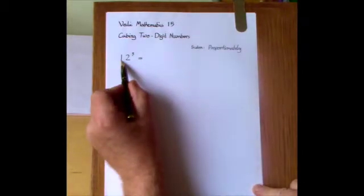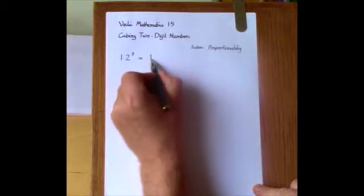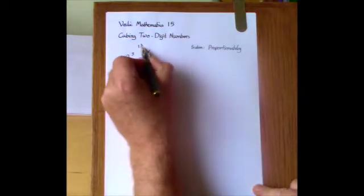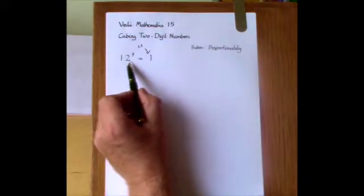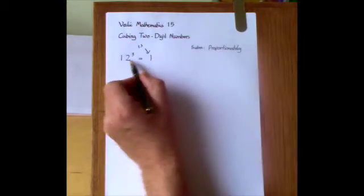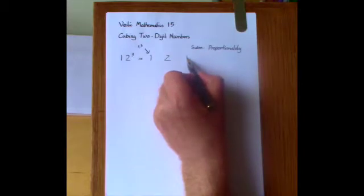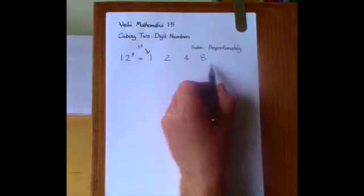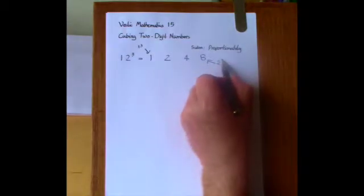We set down the cube of the first digit. The first digit is 1, so we set down 1 cubed, that's 1. We then take the ratio of the two digits — in this case 1 to 2 — and starting with this one, produce a geometric sequence with that ratio, which in this case is just doubling. We write down the next three numbers in the sequence: double 1 to get 2, double 2 to get 4, and double that to get 8. And you'll notice that 8 is the cube of the last digit 2 — it's 2 cubed.